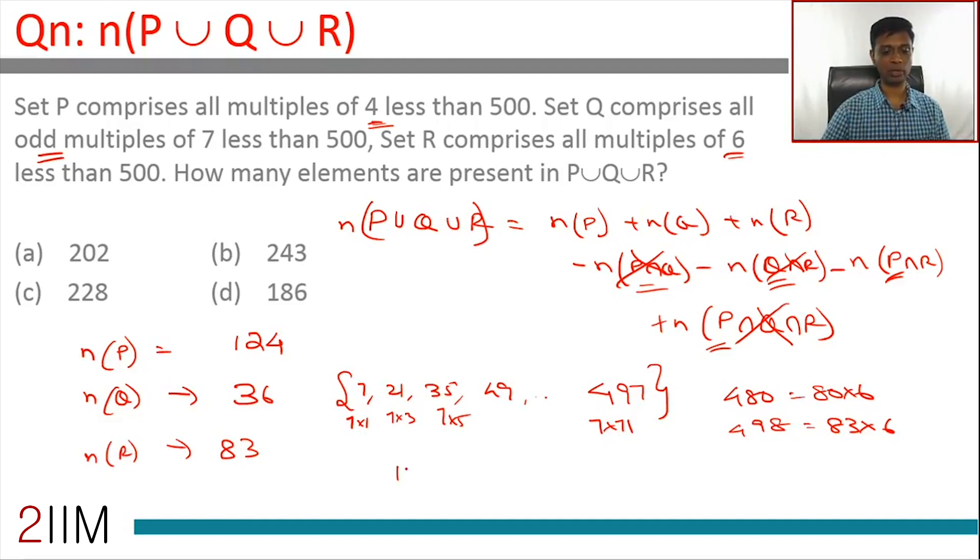We're looking at numbers 12, 24, 36... 480 is a multiple of 12. 480 is 12 into 40, so less than 500 is 12 into 41. So P∩R would have 41 elements.